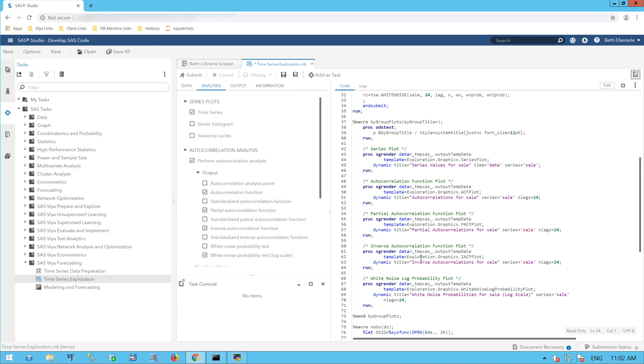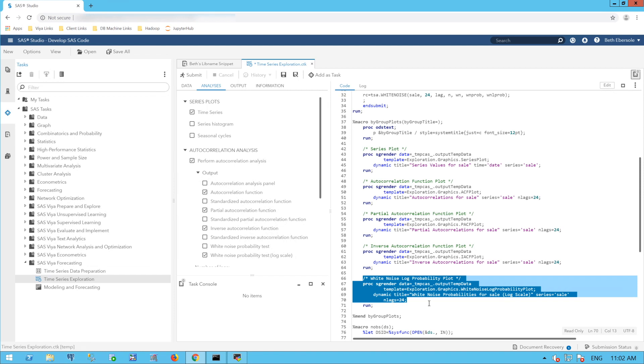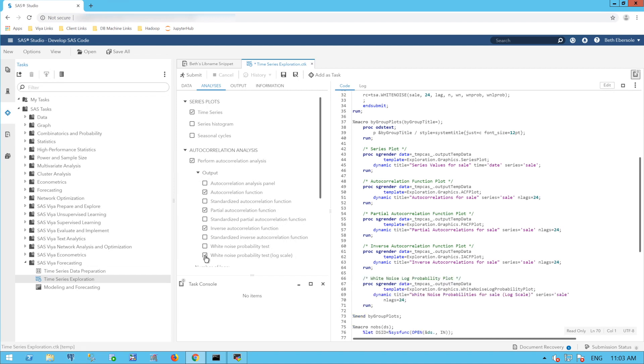When I look at the code over here, I can see that the code has been generated. You can see here is my white noise log probability. This PROC TSG Render will plot the white noise probabilities on a log scale. I'm using a template to make a nice, pretty graph. You can see when I deselect, that will disappear. When I reselect, that appears. So I'm just creating code using the task. I'll select Submit to run this.